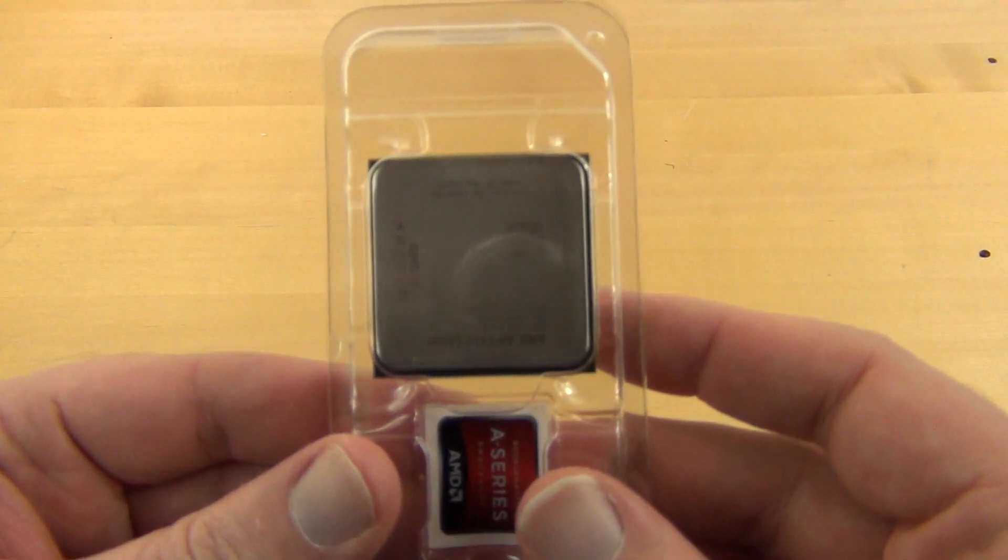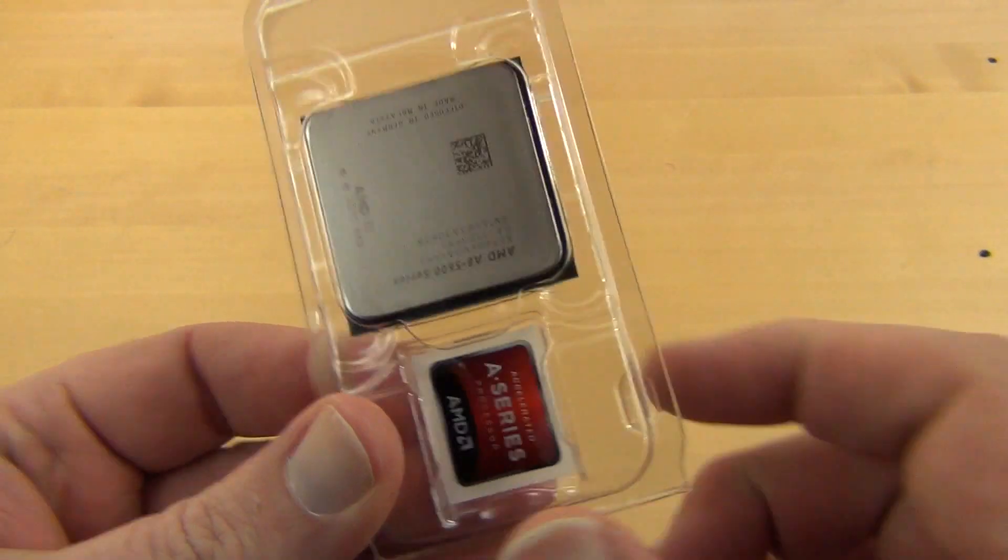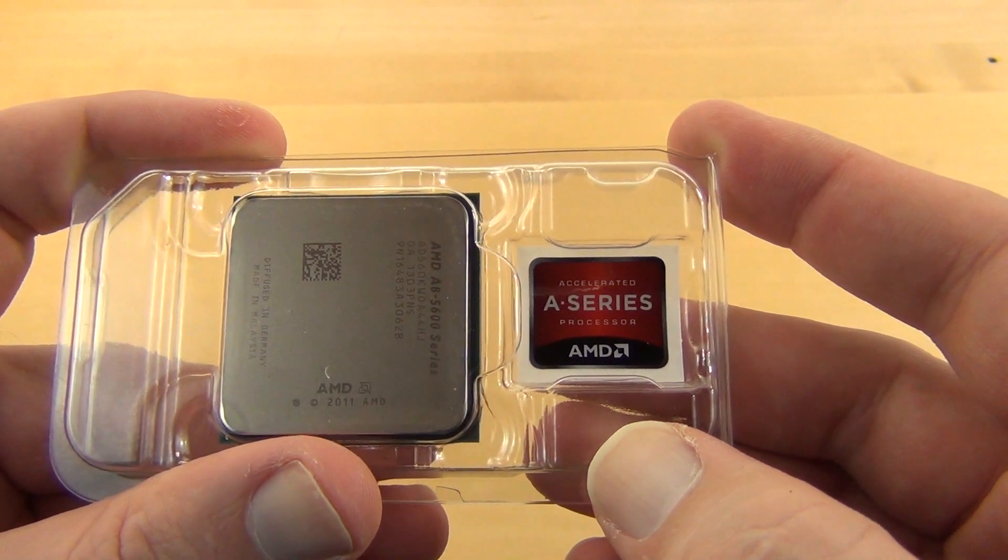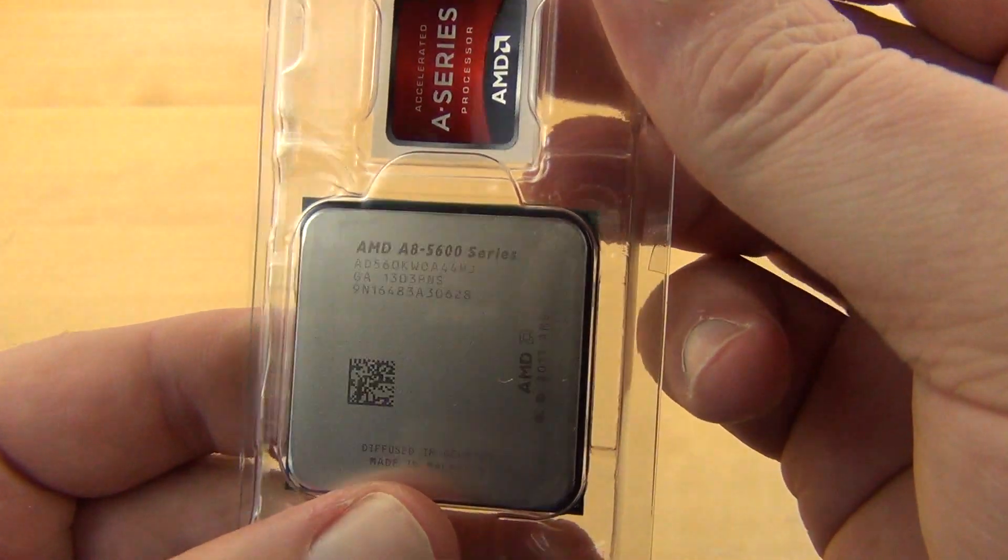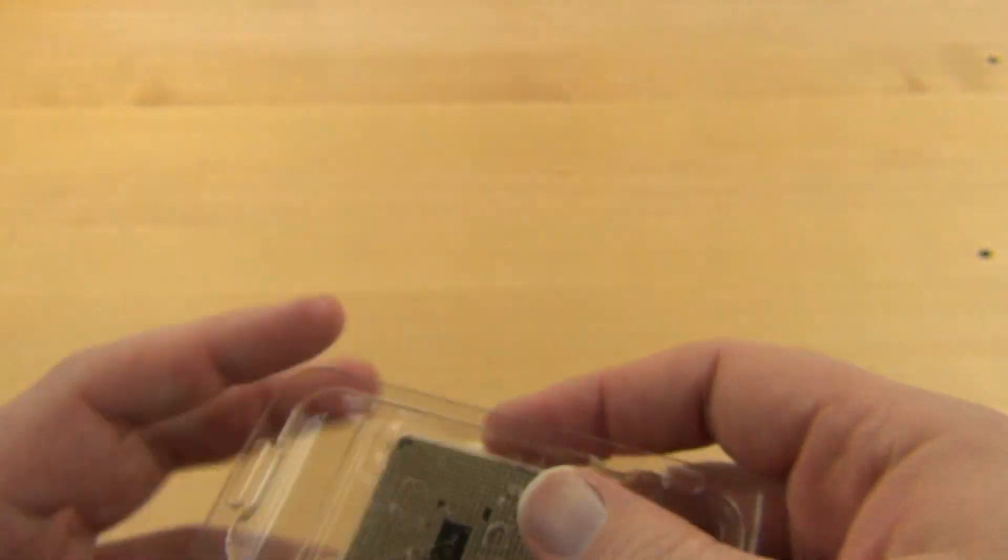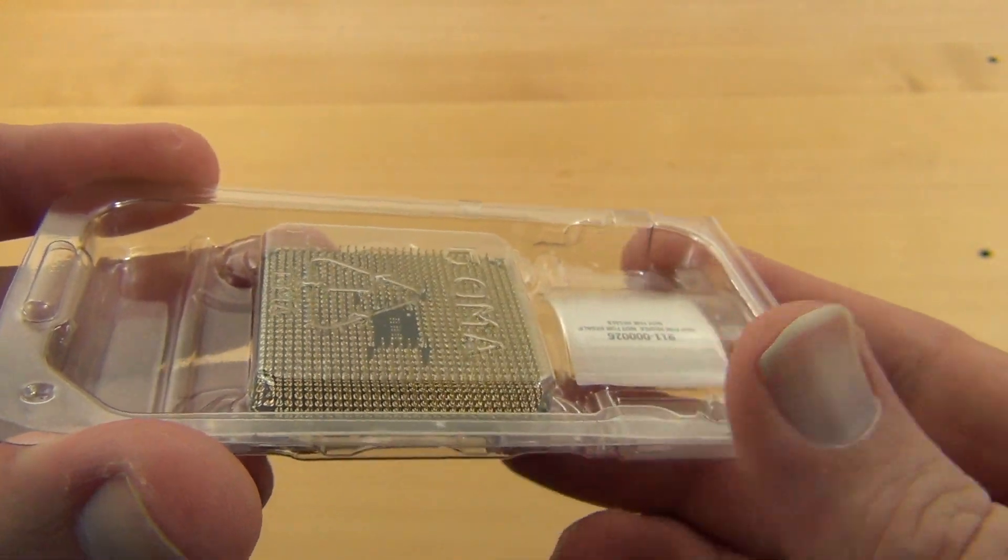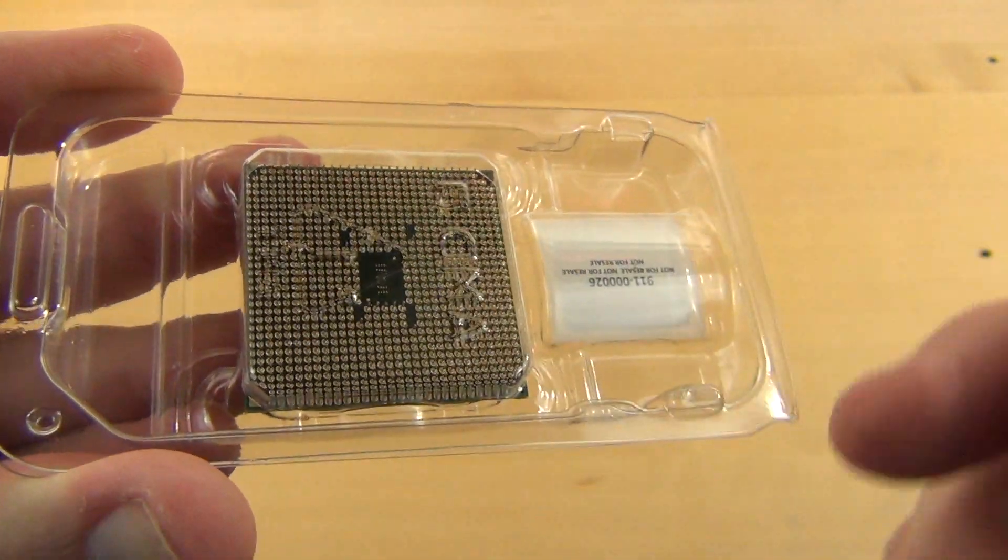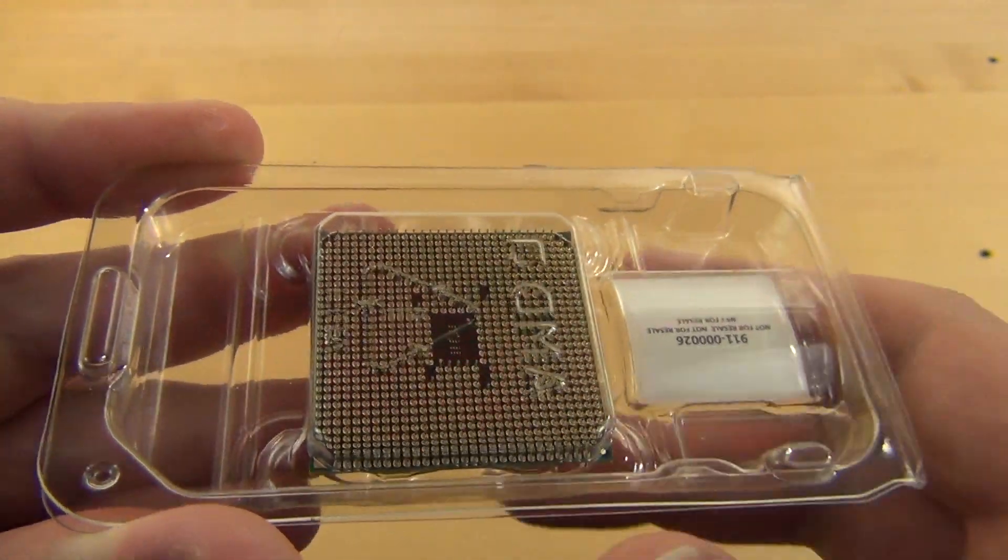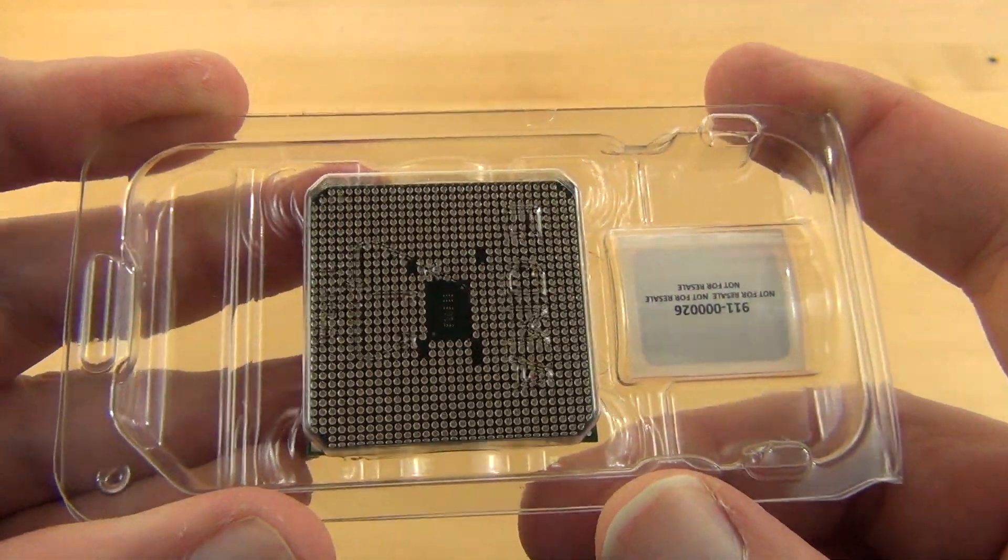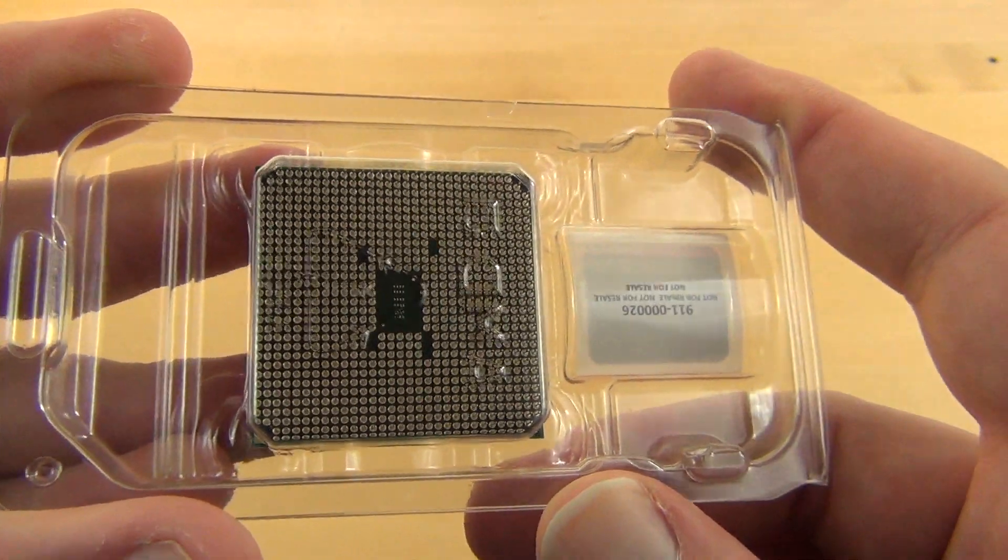So here we have the chip. We have the case badge if you're into that kind of thing. And as you can see, it's an AMD A8 5600 series. Biggest difference, you know, they're still using pins, whereas Intel is using pads. So on this one the pins are in the motherboard, and on the Intel's the pads are kind of in the motherboard.